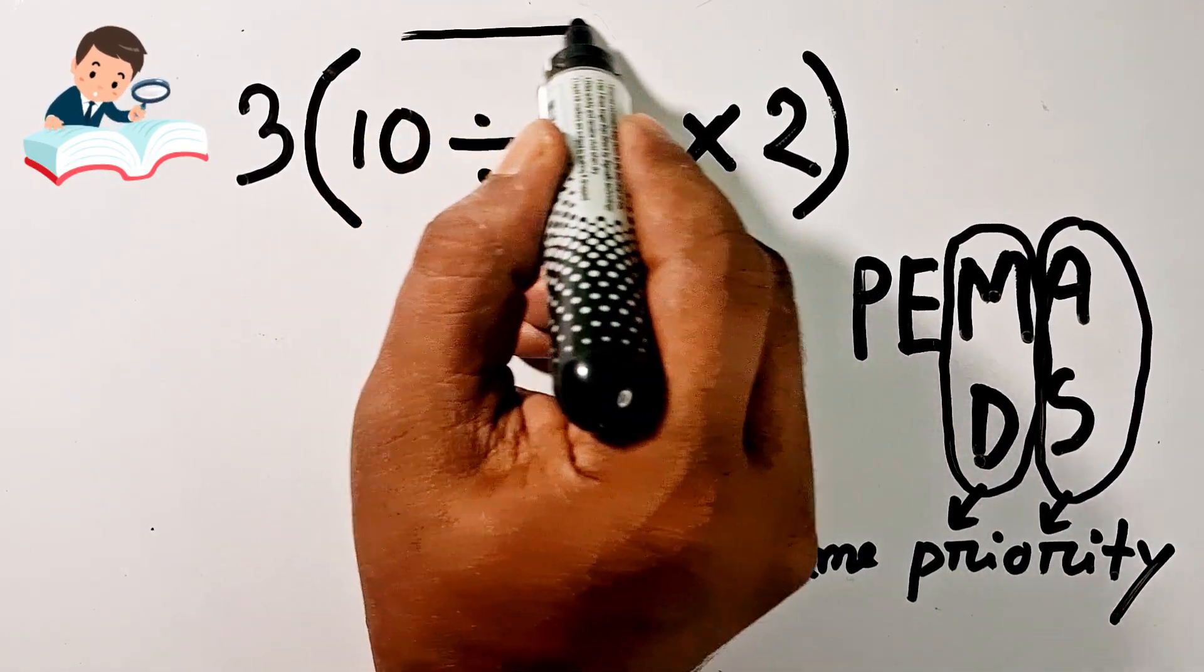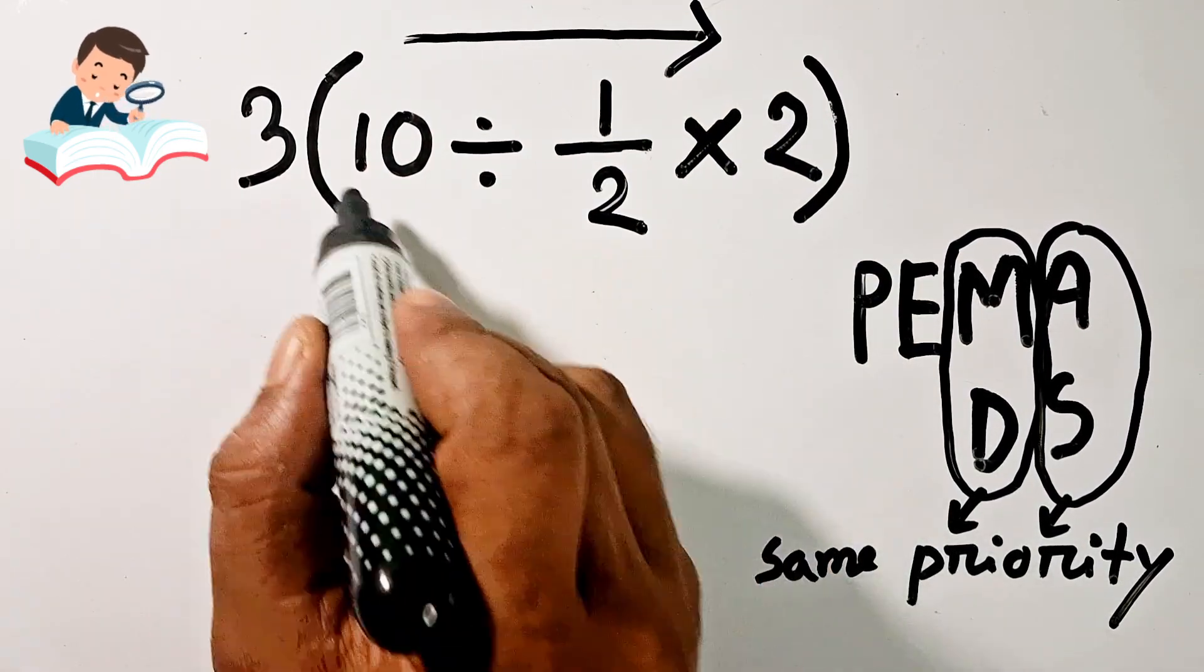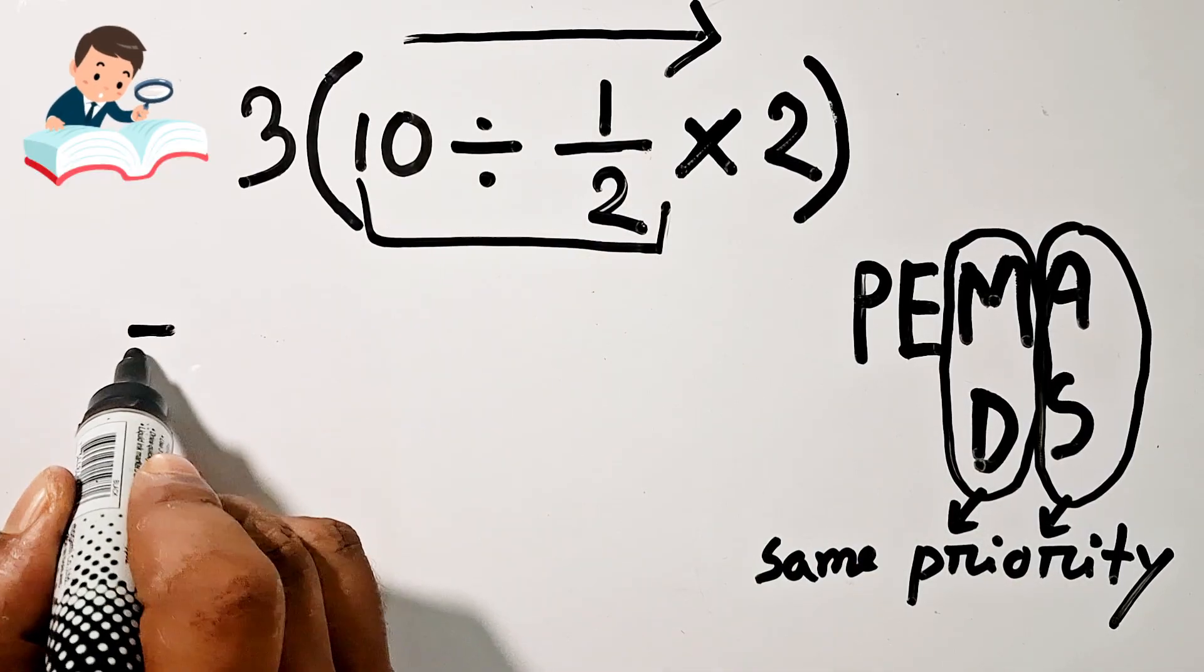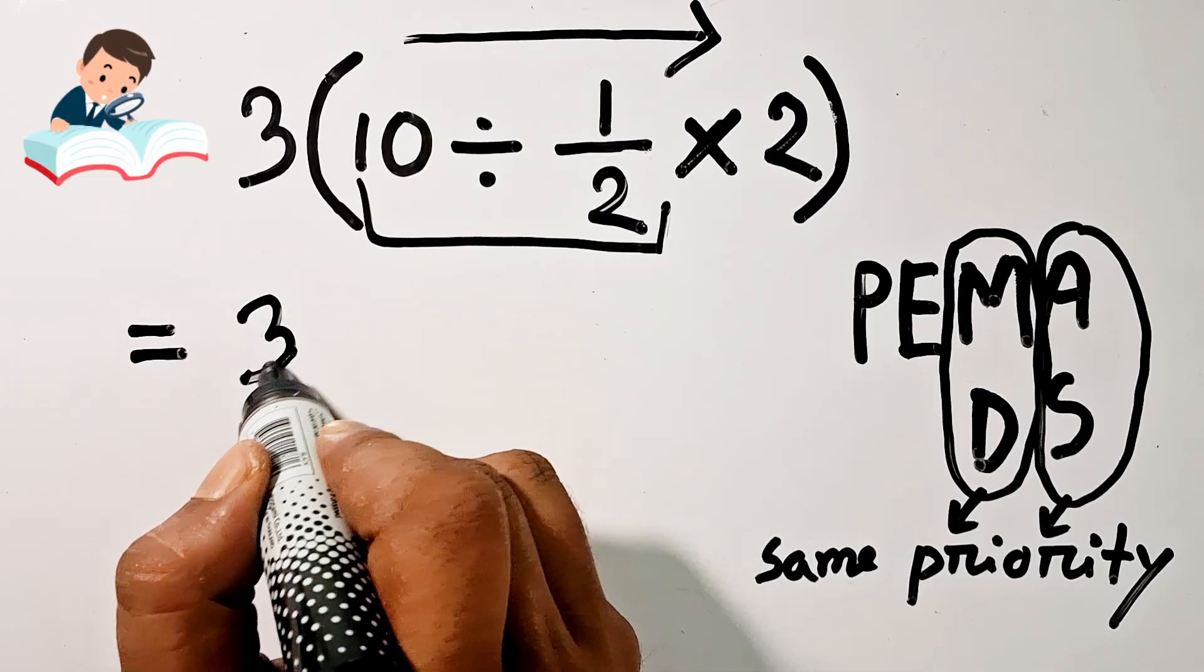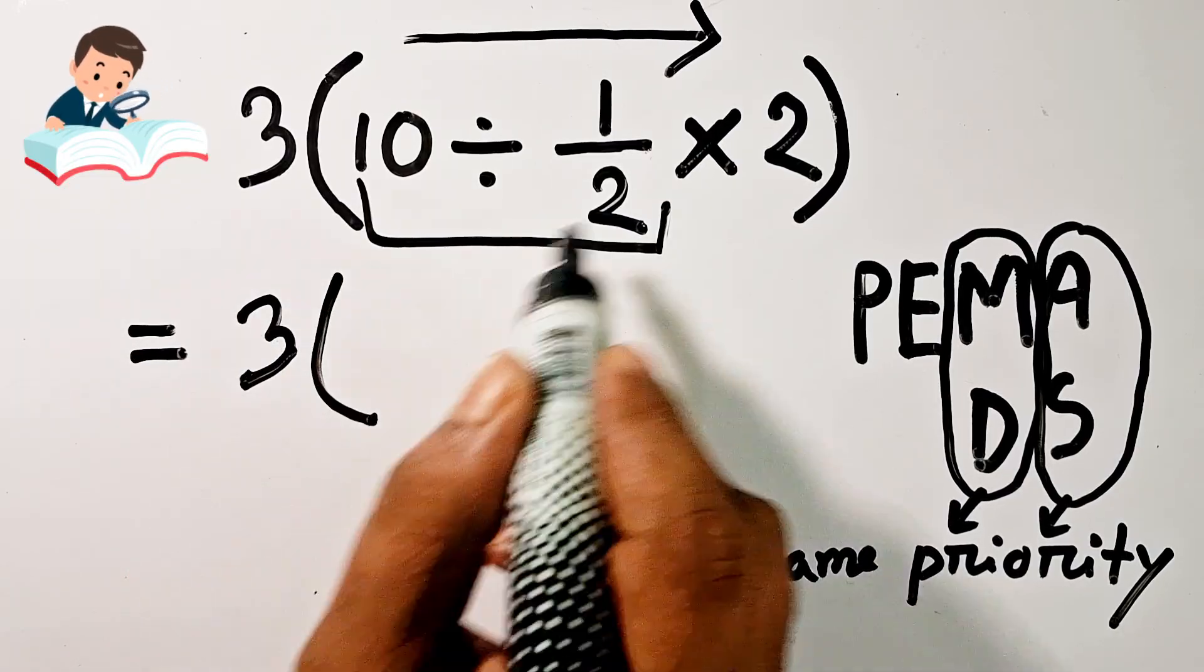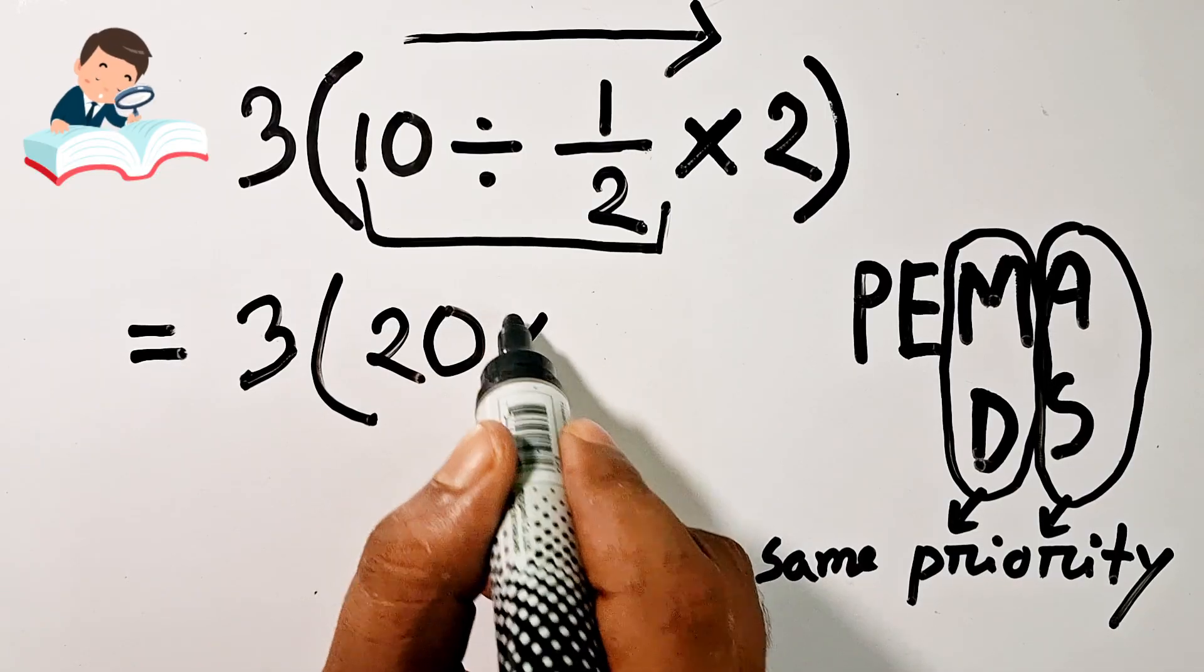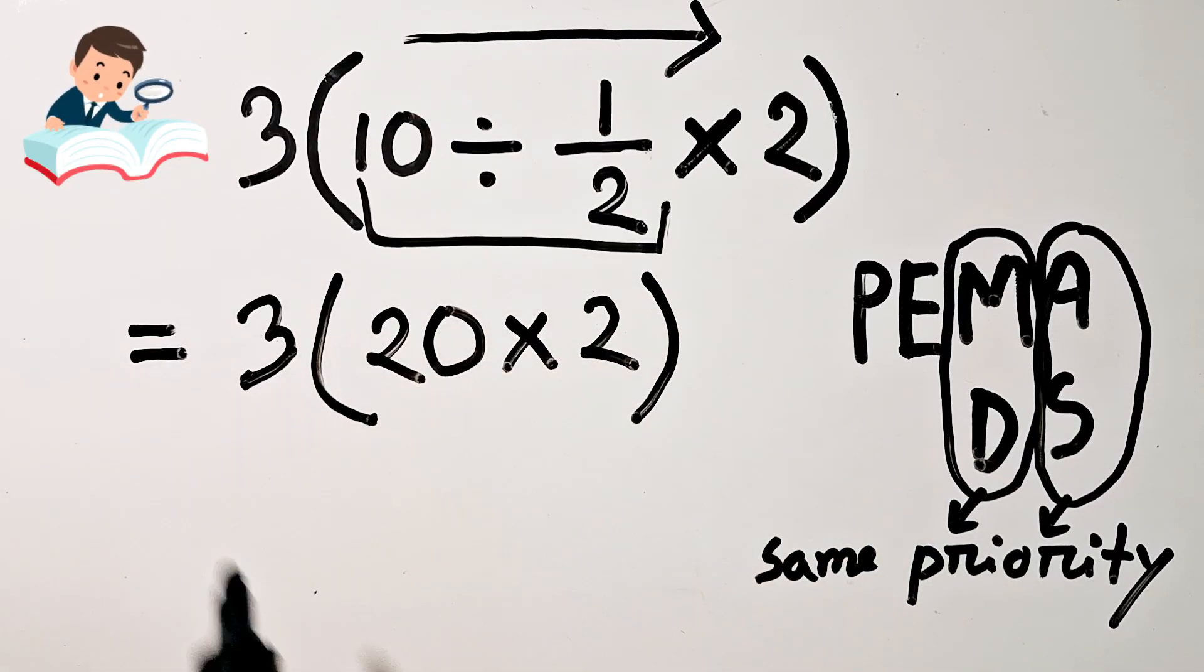10 divided by half is equal to 20, times 2, 20 times 2 is equal to 40.